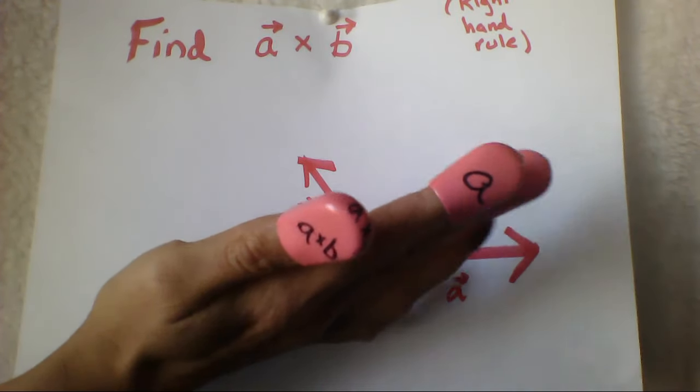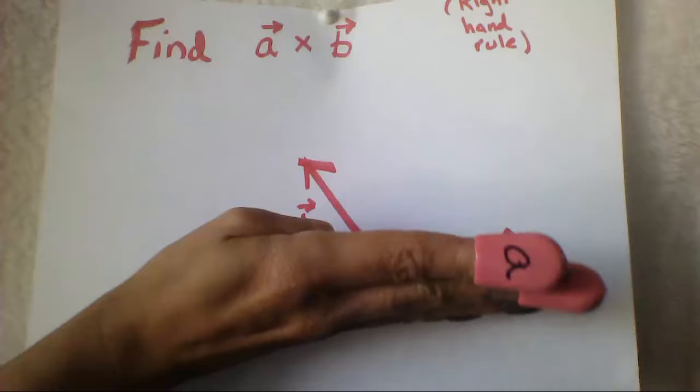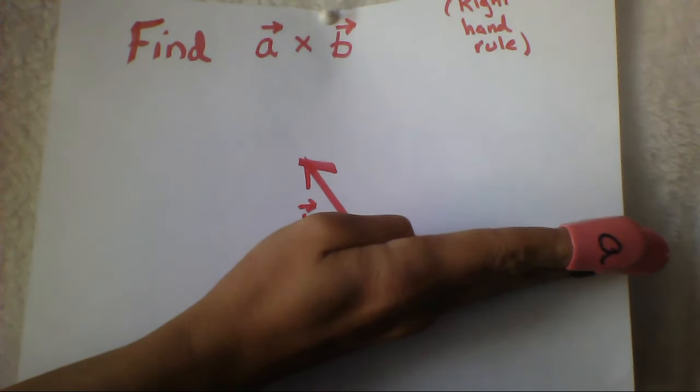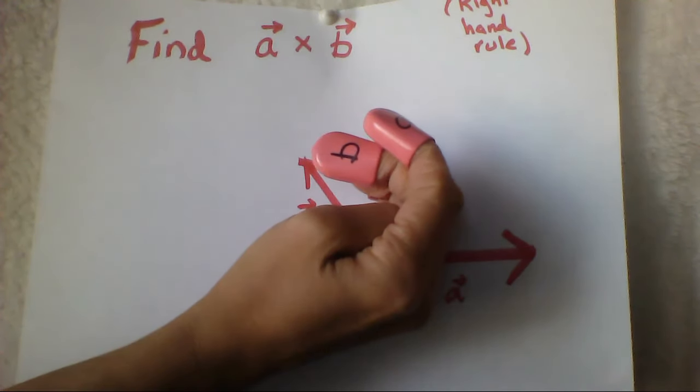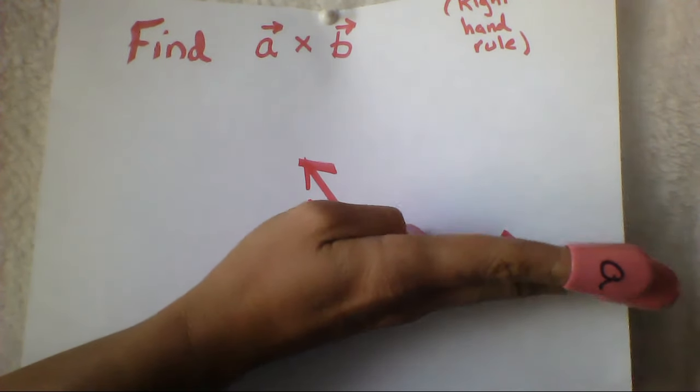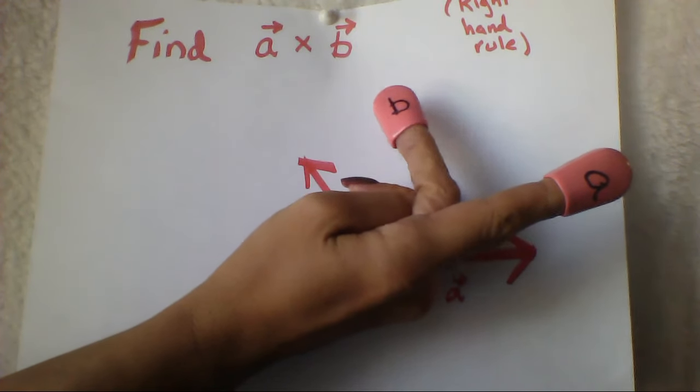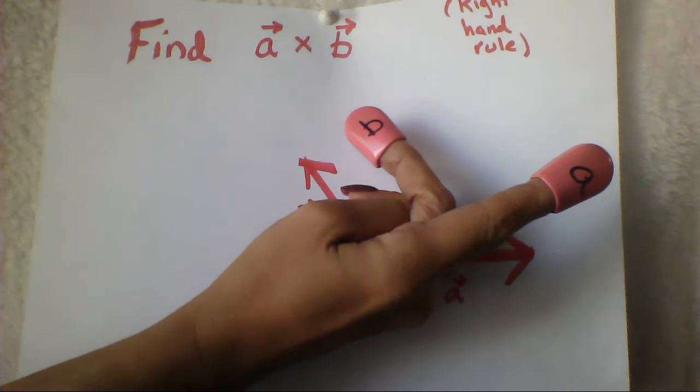Maybe an easier way to start this right hand rule is to start with your hand pointing in the direction of vector A. Curl your fingers in the direction of B. We can see that my finger is pointing in the direction of A, and the third finger is curling towards vector B.